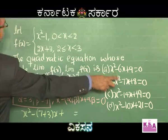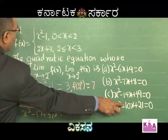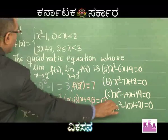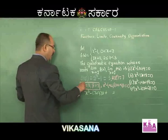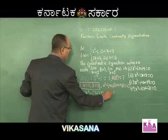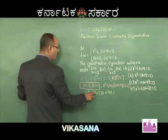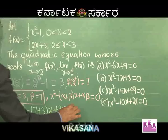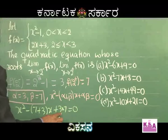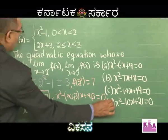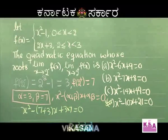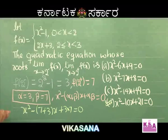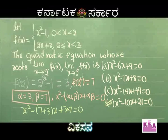Looking at the options: -6, -7, -14, -10 — the coefficient of x is -10, so option D is correct. Confirming: x² - 10x + 21 = 0, therefore option D is correct. See how simple the problem is. Make a note of this. We shall go to the next problem.